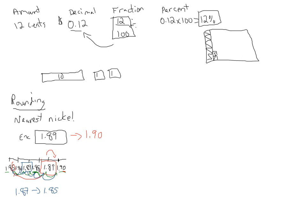Basically, if the number is higher than seven, anything higher than seven is going to round up to the nearest ten. Anything between five and seven is going to round down to the nearest five.